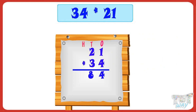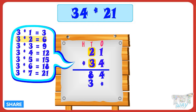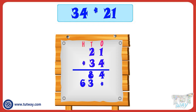Now put a multiplication sign below the one's place digit of the product. Now multiply 21 with the 10's digit, that is 3. 3 multiplied by 1 equals 3. Write 3 in product at 10's place. 3 multiplied by 2 equals 6. Write 6 in product at 100's place. Now we have multiplied 21 with both the digits of 34.